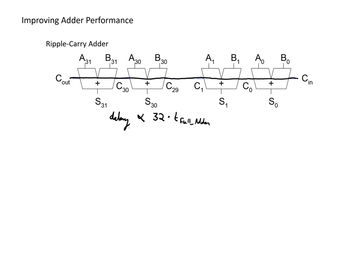More generically, if you have n bits, the delay is proportional to n times the delay of the full adder. Generally speaking, this is a pretty long delay. Most computers are adding either 32 or even 64 bits, and the delay of a full adder is at least two or three logic gates. So this is a lot of logic gates and would really restrict the performance of many circuits. We're interested in what ideas we can use to improve the performance of adders.